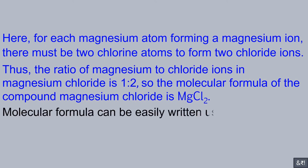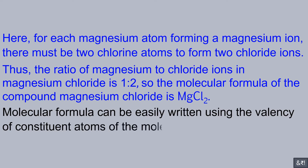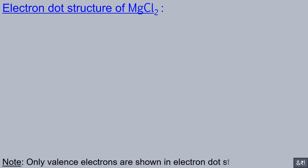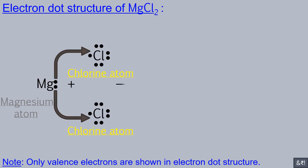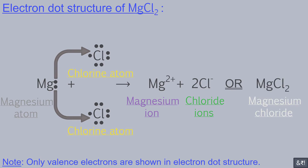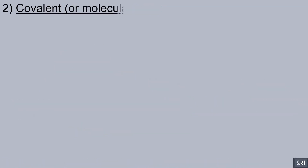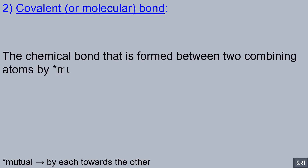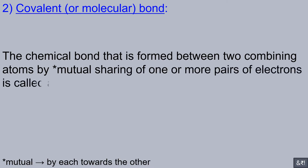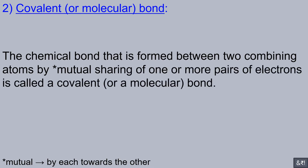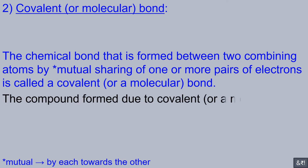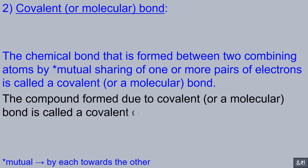Molecular formula can be easily written using the valency of constituent atoms of the molecule. The chemical bond that is formed between two combining atoms by mutual sharing of one or more pairs of electrons is called a covalent bond. The compound formed due to a covalent bond is called a covalent compound.